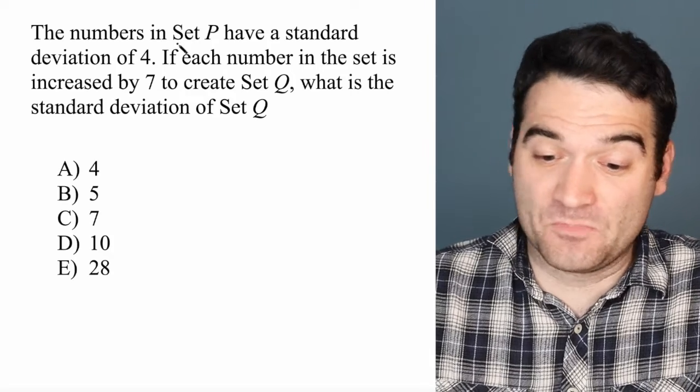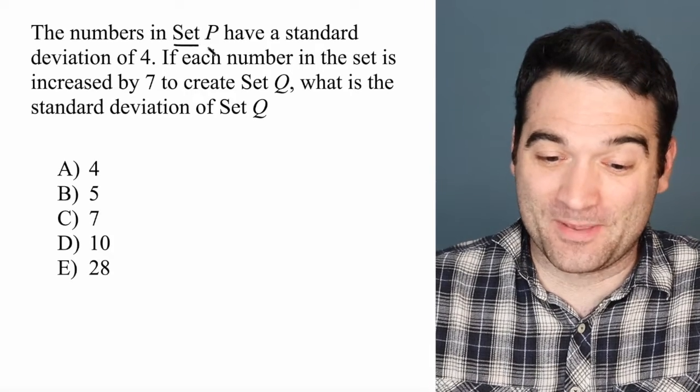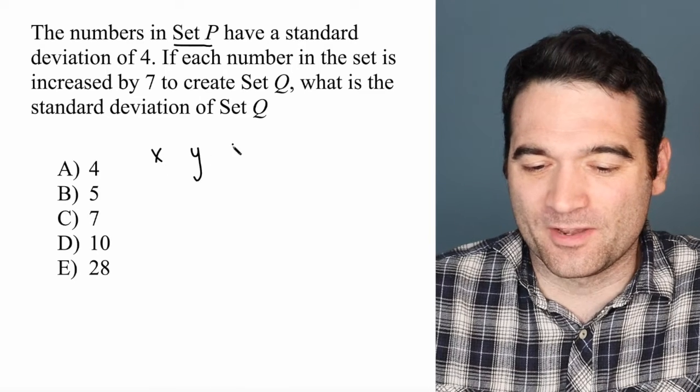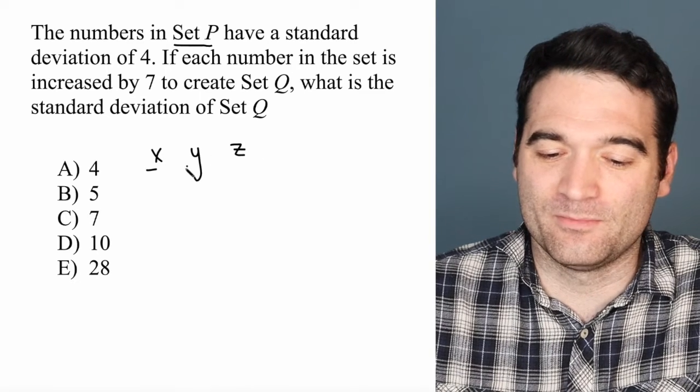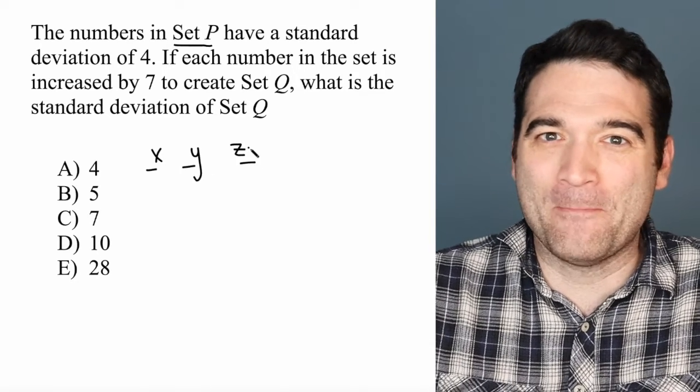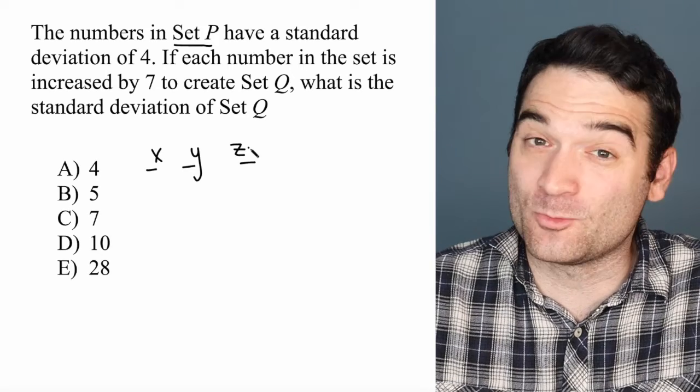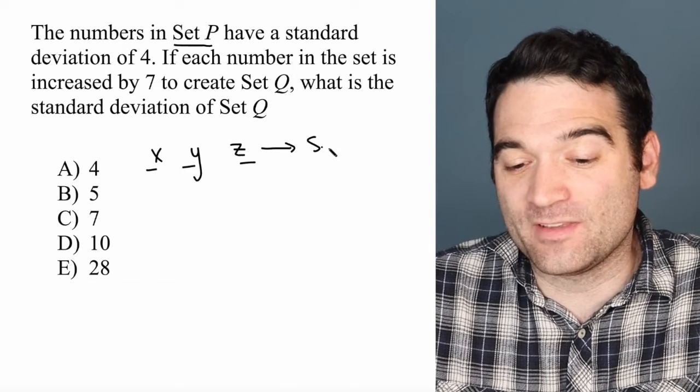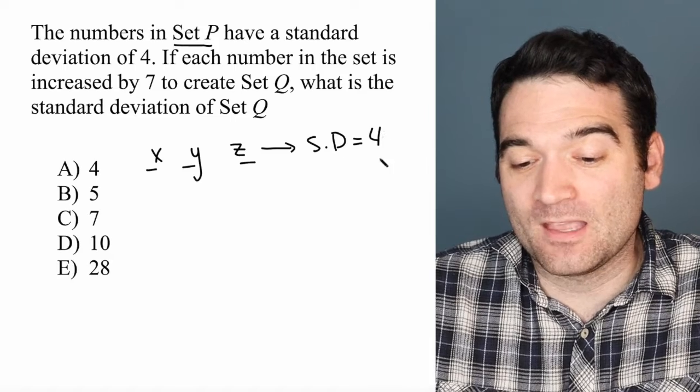We have some number of numbers in set P. We don't even know how many numbers there are. Let's just pretend that X, Y, and Z are the numbers that make up set P. And when I do my magic standard deviation calculation, which I don't actually have to know, I find that the standard deviation of this set is equal to 4.